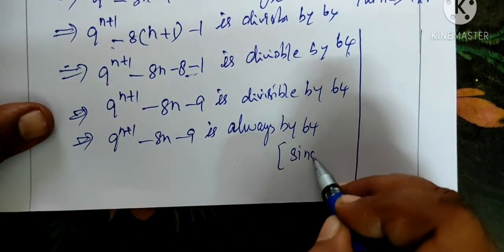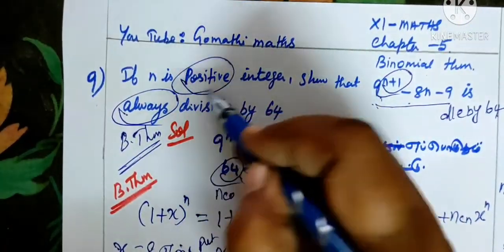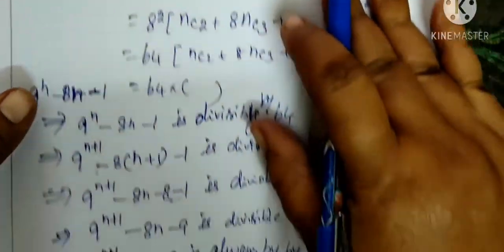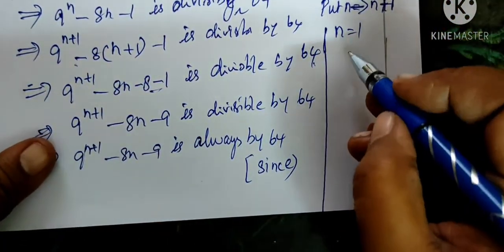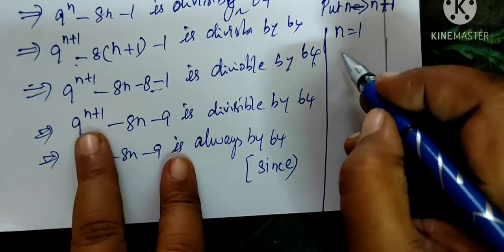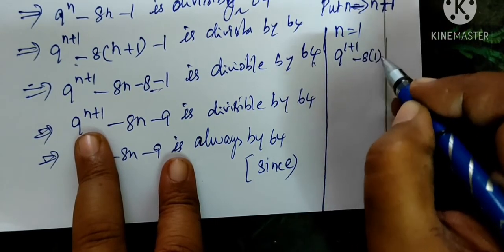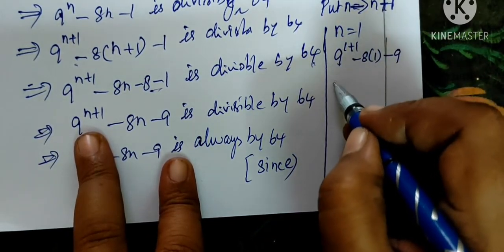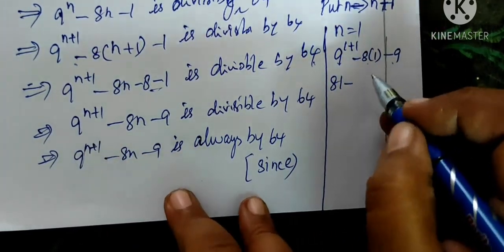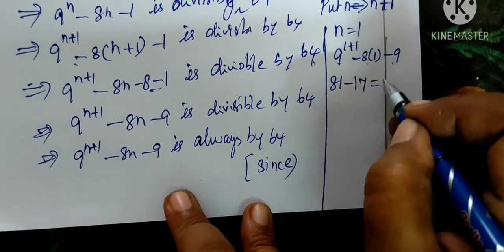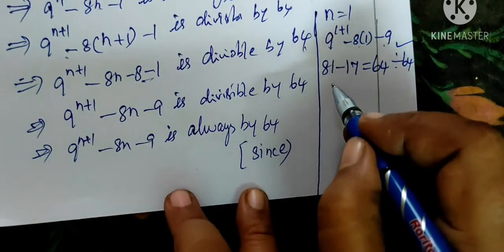In this question, always divisible by 64. Let's verify. Take n equals 1. We write 9 power 1 plus 1 minus 8 bracket 1 minus 9. Then 9 squared equals 81 minus 17, which equals 64.